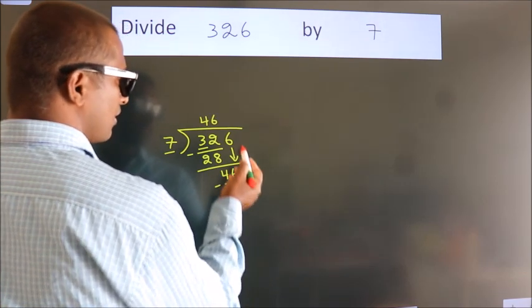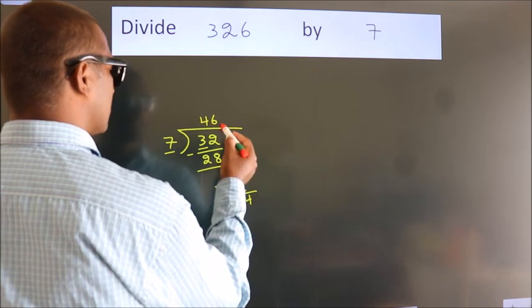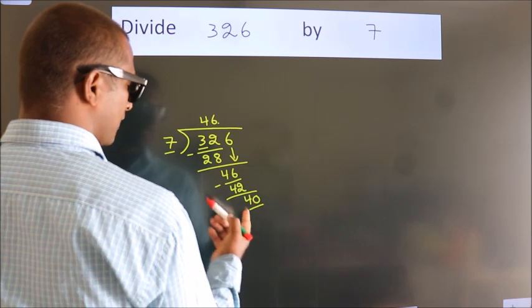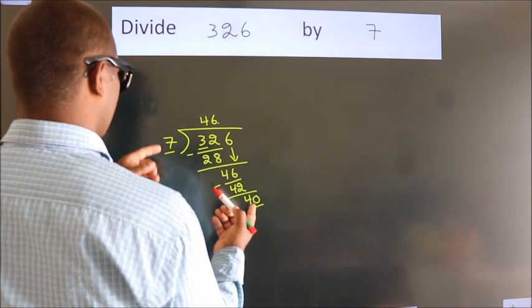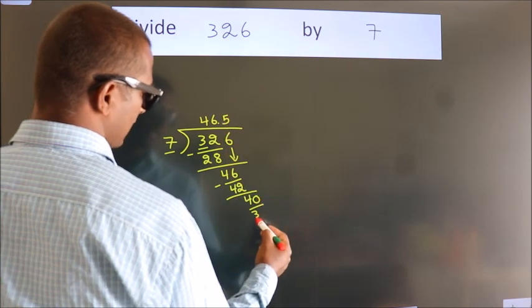After this, no more numbers to bring it down. So what we do is, we put a dot, take 0. So 40. A number close to 40 in the 7 table is 7 times 5, 35.